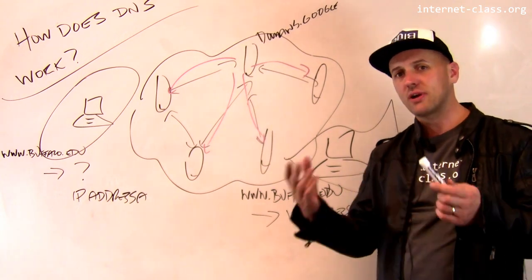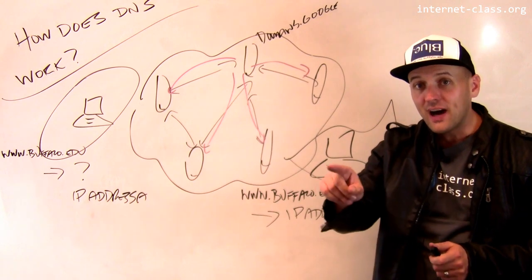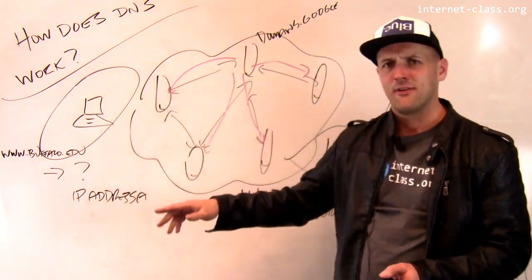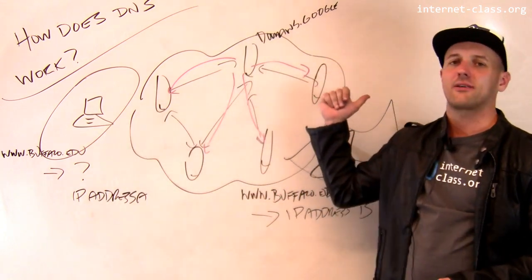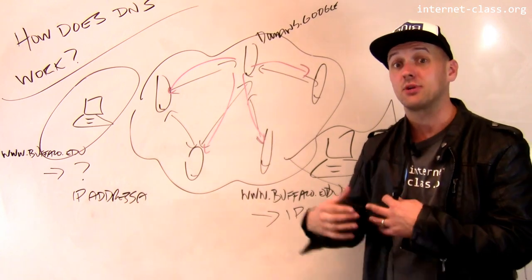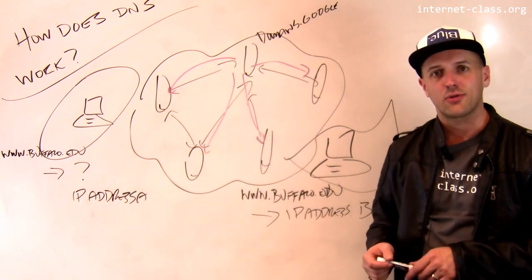So if you run a trace route to a particular website from different parts of the world, what you'll find is a trace route to newyorktimes.com from Asia, it's not going to come all the way across the Pacific. It's going to terminate somewhere in Asia where the New York Times is paying someone to host content for their website so that the roundtrip times are a lot shorter.